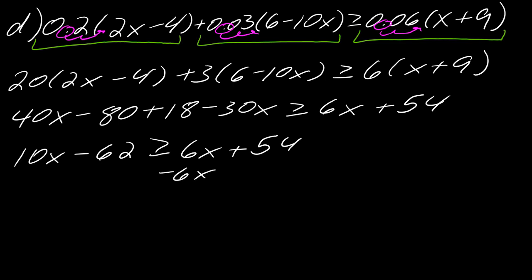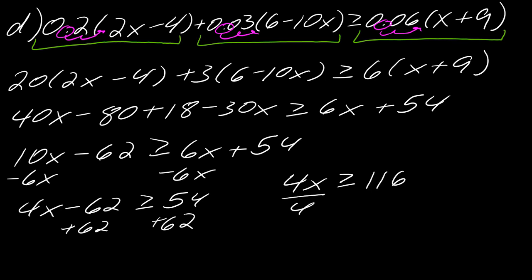Okay, so then that's 6x + 54. So let's see, let's subtract off the 6x. So now I've got 4x - 62 is greater than or equal to 54. And then I'll add 62 to both sides. So now I've got 4x is greater than or equal to 116, which if I divide both sides by 4, I'll get 29.